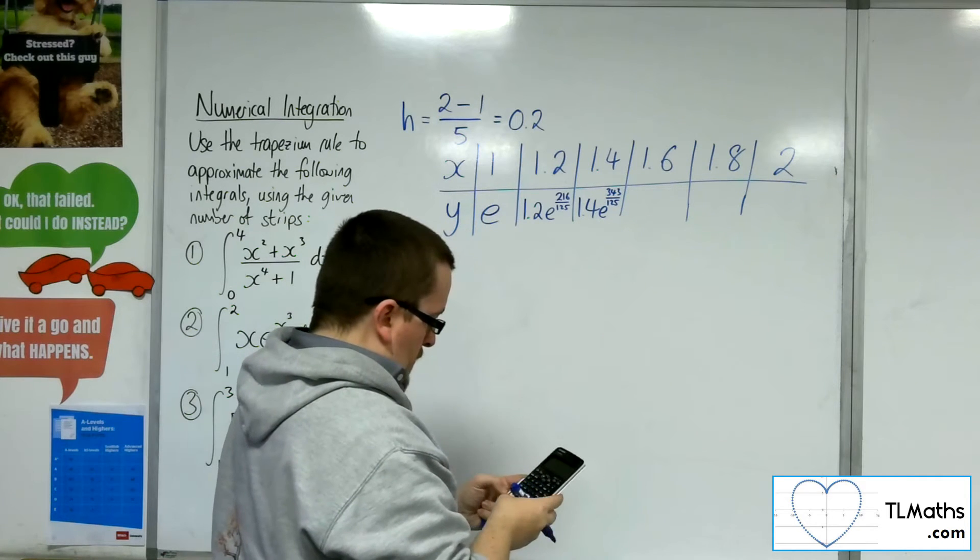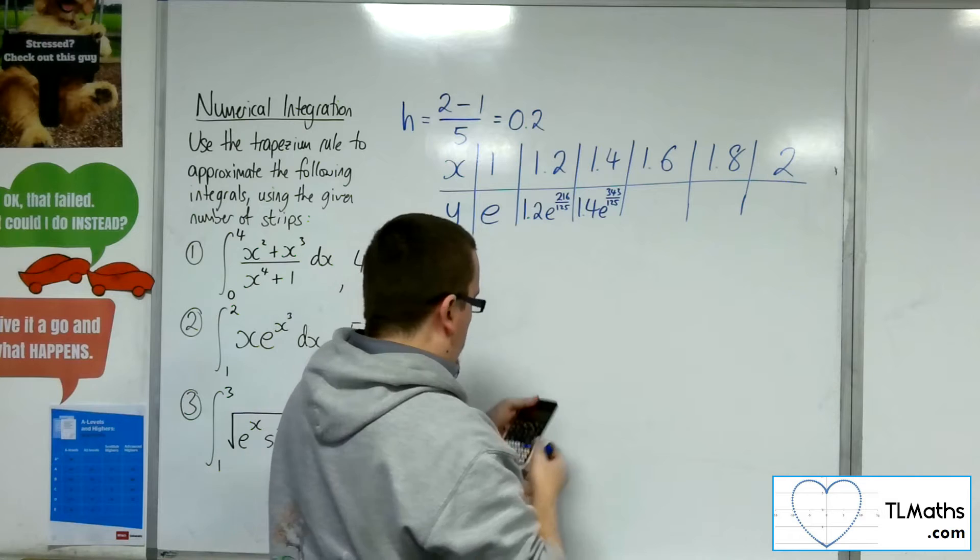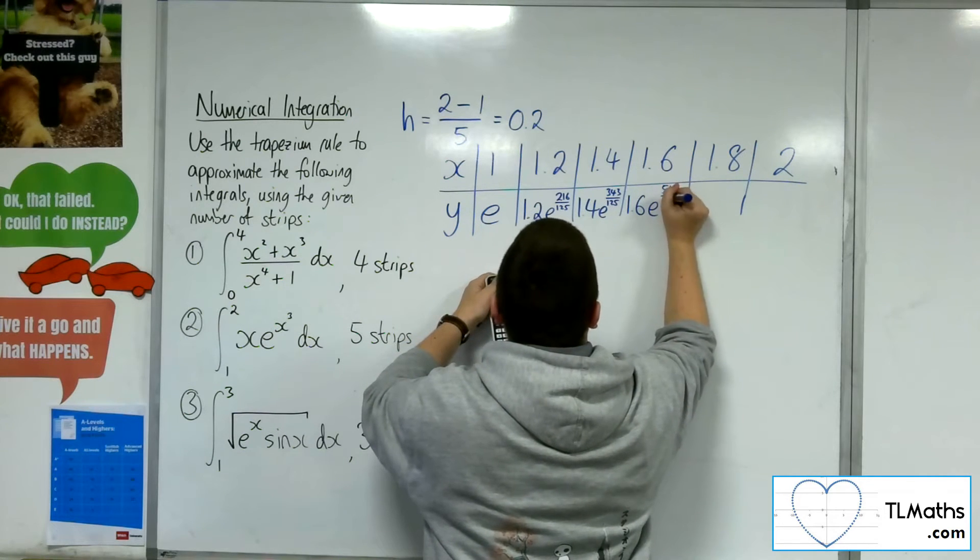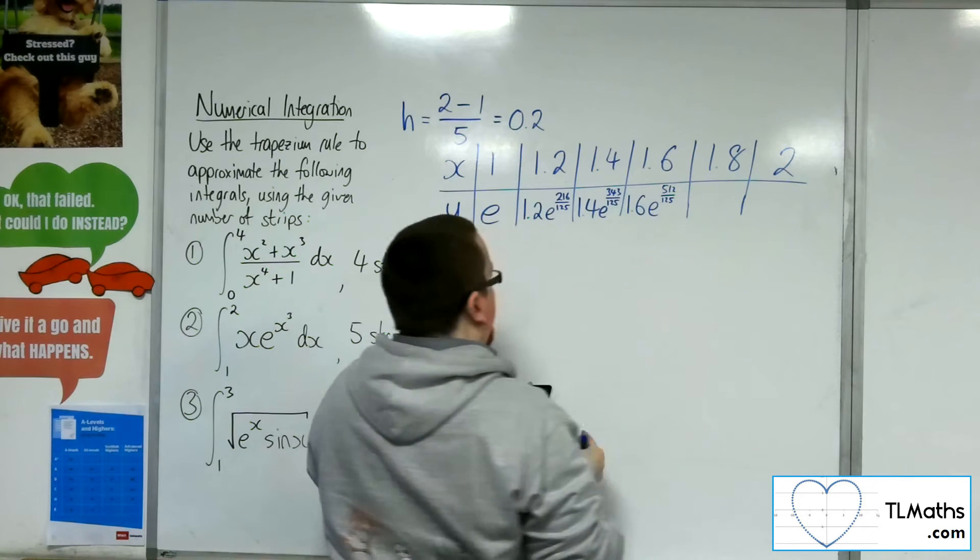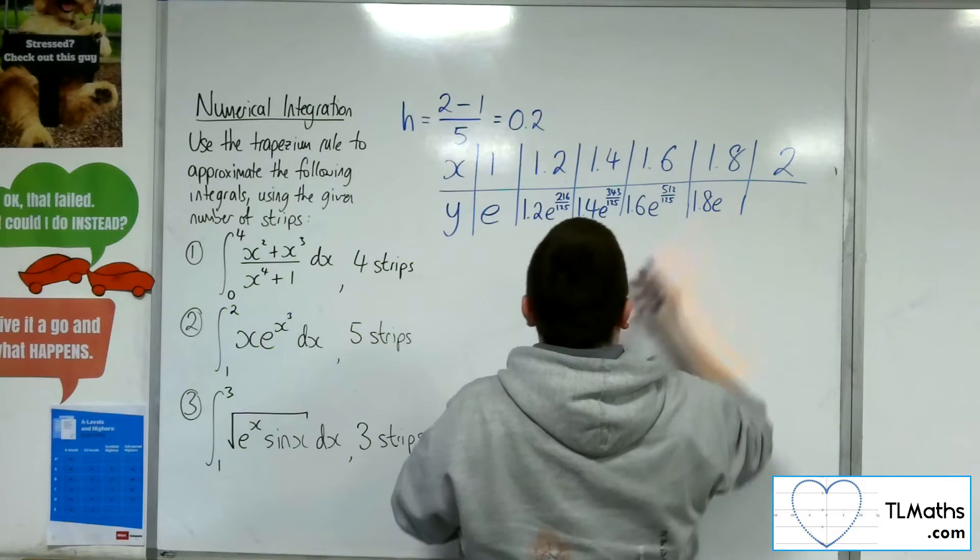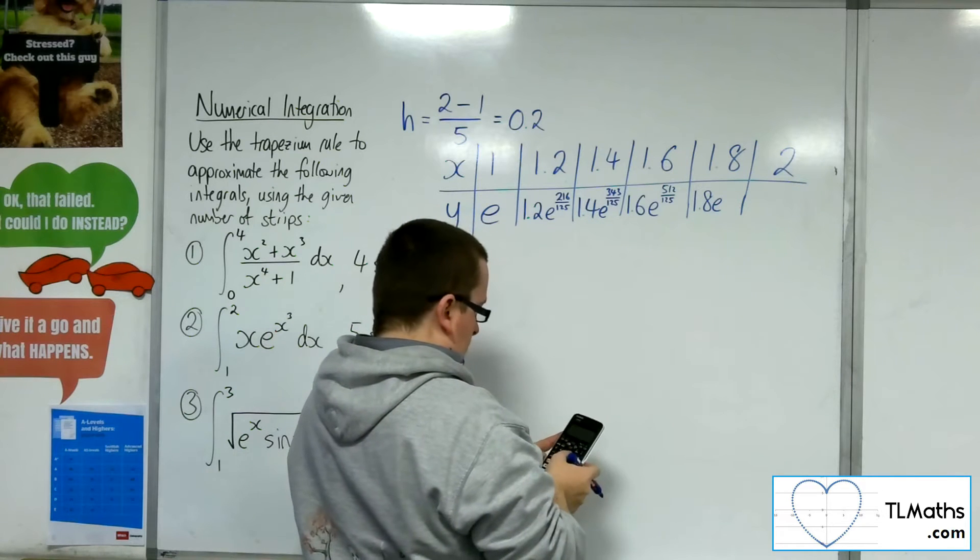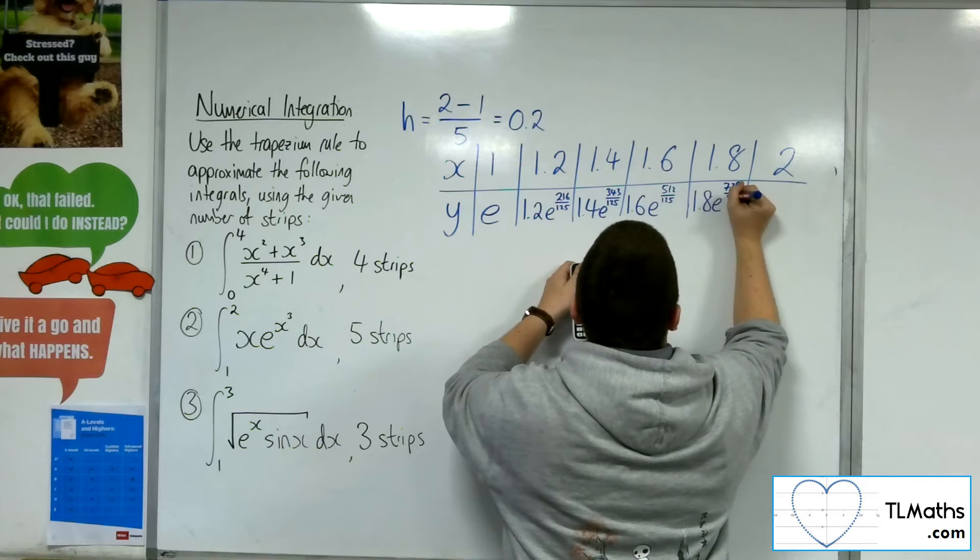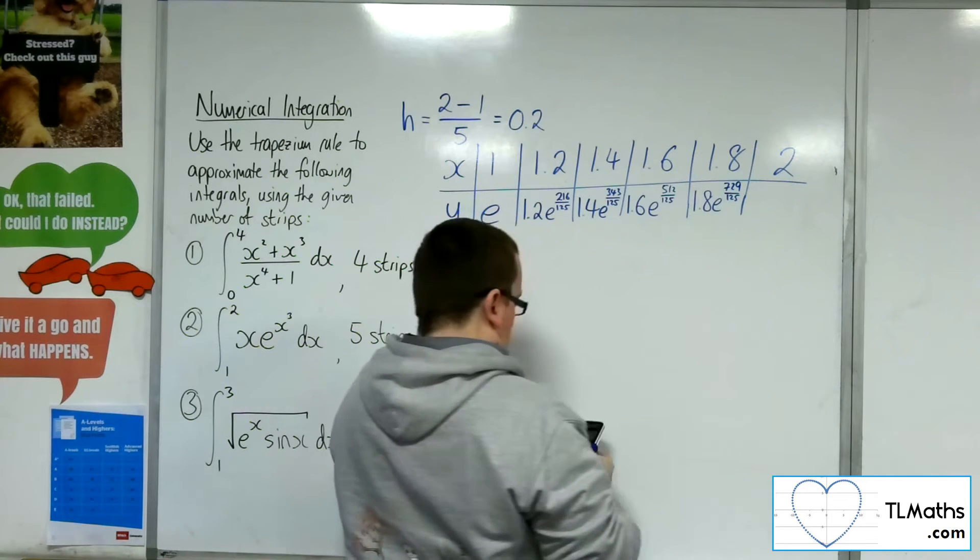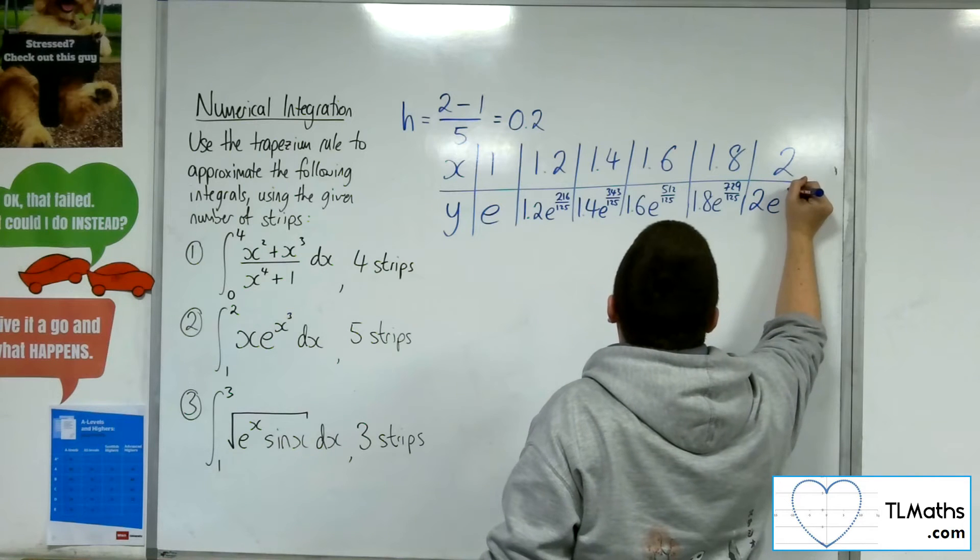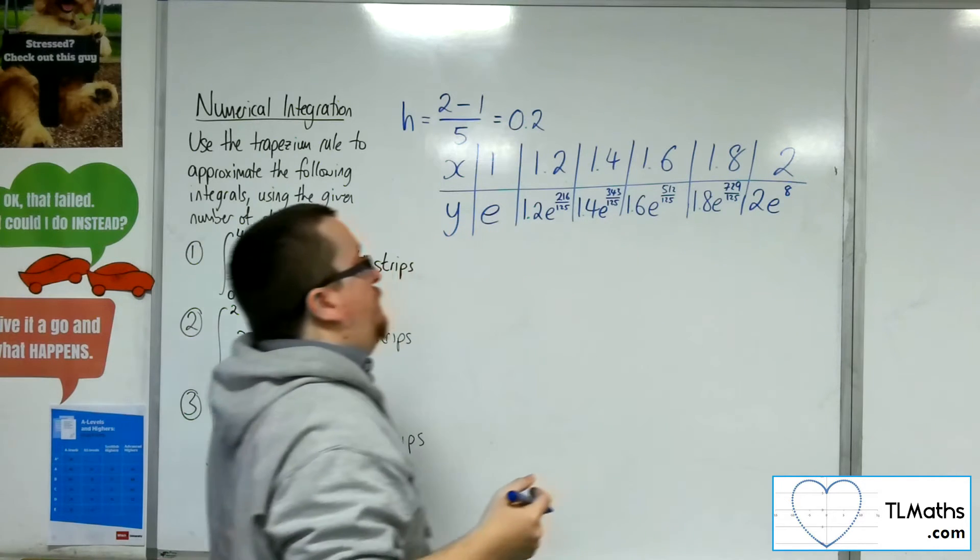Now 1.4 cubed. So we've got 1.4 e to the 343 over 125. 1.6 cubed. So 1.6 e to the 512 over 125. And then 1.8 e to the 1.8 cubed, which is 729 over 125. Substituting in 2, we're going to get 2 e to the 8.